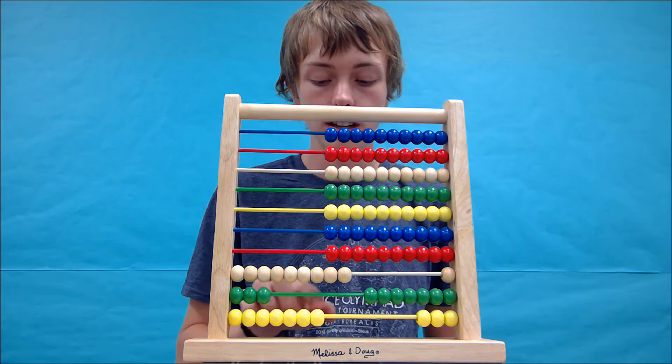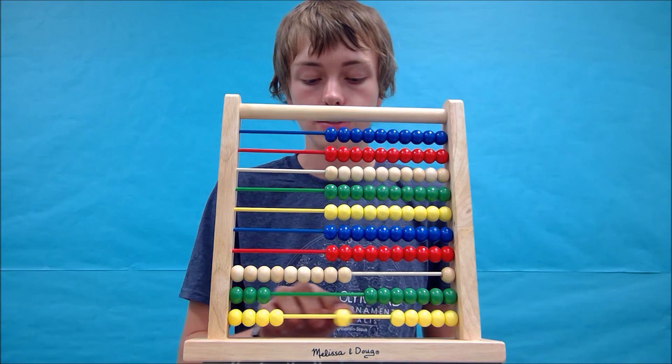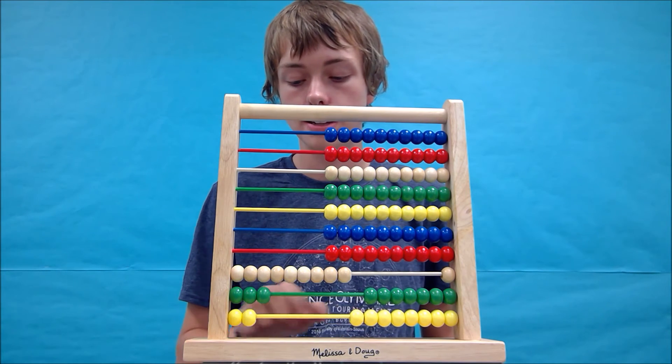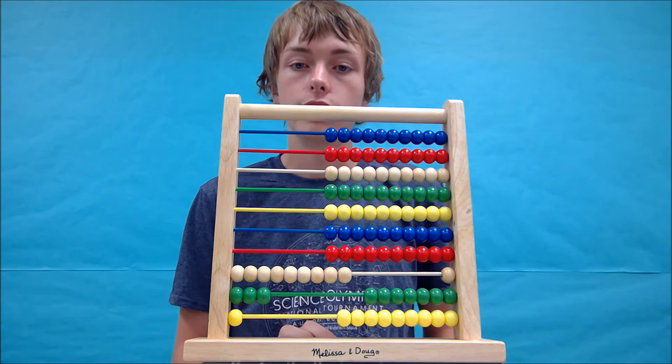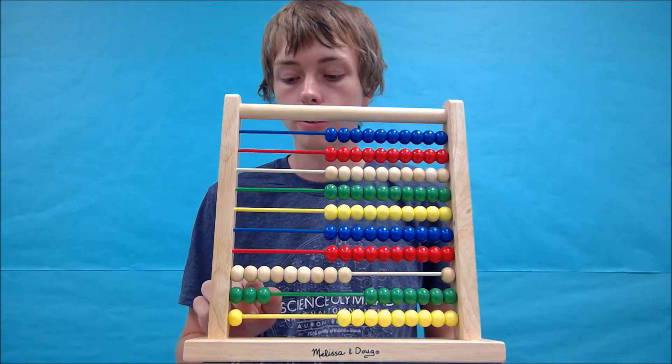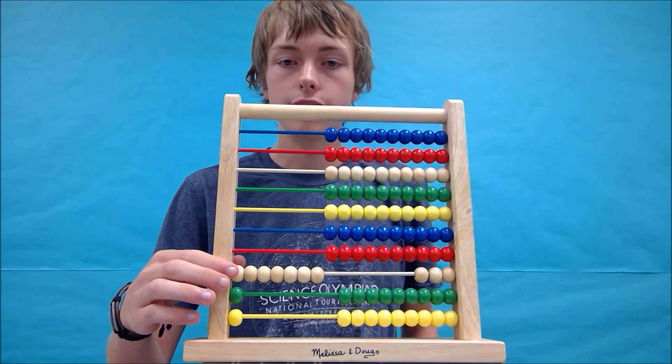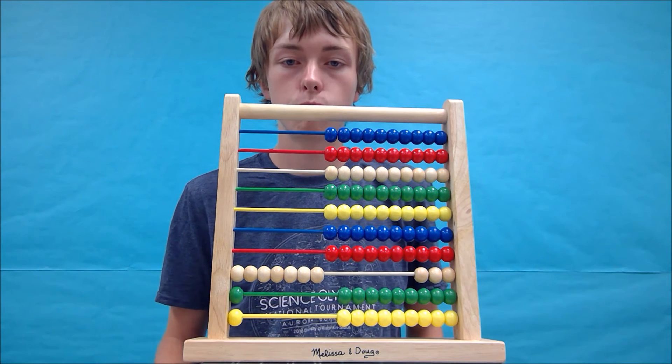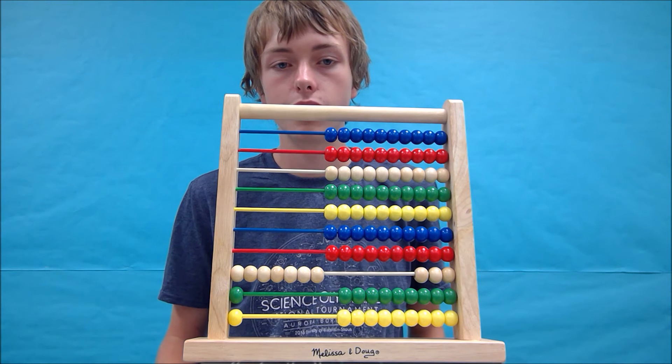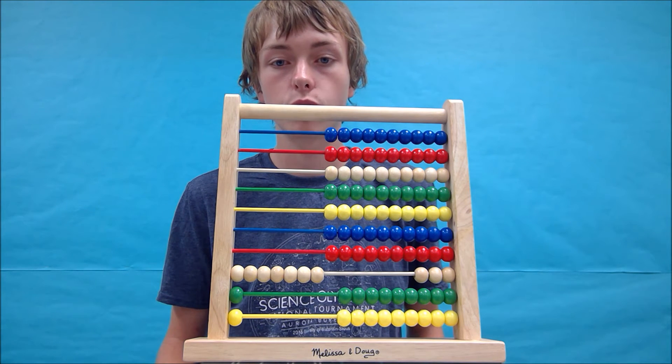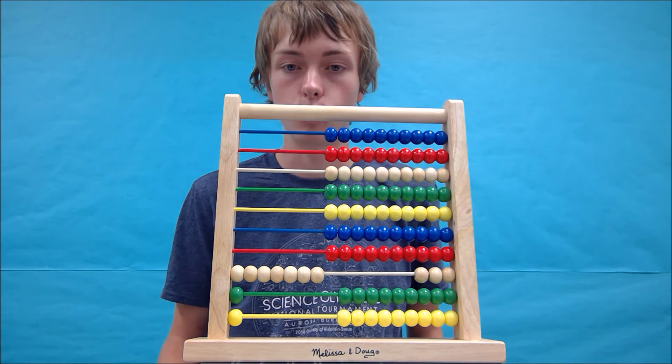Now we're going to subtract 2 in the tens place and 2 in the hundreds place. This would be the answer to the problem 940 minus 229, but we want to continue and subtract 420 and 109 from that as well.